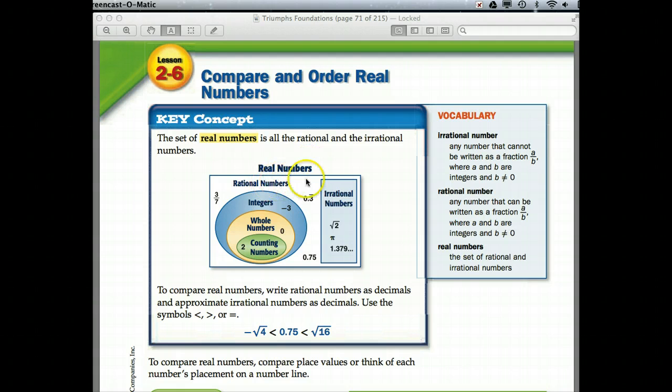Real numbers are divided into rational and irrational. Now, some numbers I'd like for you to add to counting. These are numbers you count with 1, 2, 3, 4, 5. Now, whole numbers just takes the counting numbers and adds a 0 to it. That's the one thing that's different.